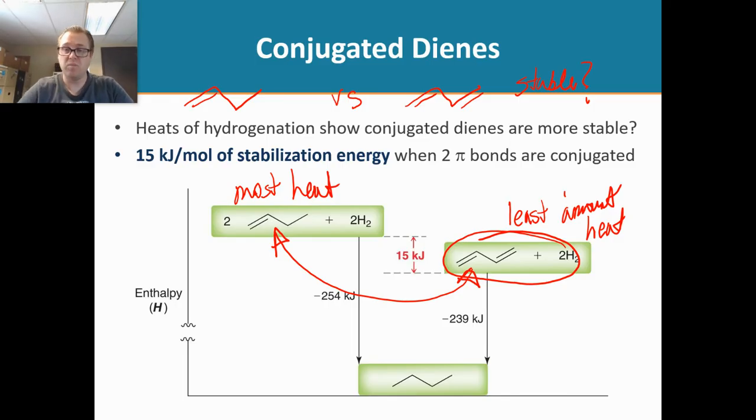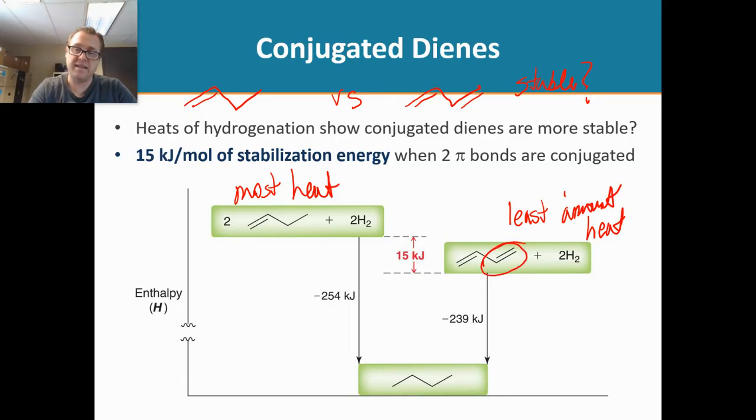Now, how much more stable is it? Right there. It's 15 kilojoules per mole of stabilization, just by adding that second alkene there. Which, when you add that second alkene, you generate a conjugated system. And like I said in the previous videos, when electrons are delocalized and can move around, that's what's happening in a conjugated pi system. Electrons have more freedom of movement. So it's lower in energy. And so this hydrogenation experiment demonstrates that.